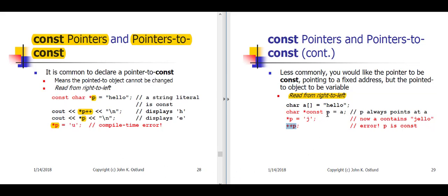On slide 29, P is a const pointer to a char. P is const, but the char that P is pointing to is not const. So we can change star P, but we can't change P. That's the distinction between a const pointer, and notice how really important it is to read these declarations from right to left.